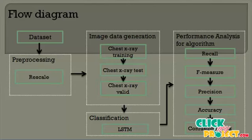Then we split the training, testing, and validation dataset into test and train data. After splitting, the dataset is processed as arrays into the classification method. In the classification method, we use a deep learning neural network of Long Short-Term Memory and Convolutional Neural Network algorithm, then analyze performance for recall, precision, accuracy, and confusion matrix.